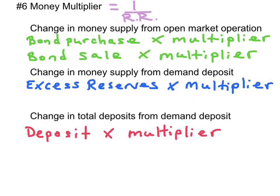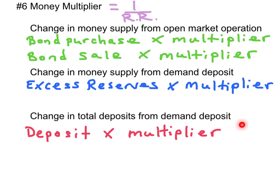The next concept is the money multiplier, which is equal to 1 divided by the reserve ratio. If the reserve requirement is 10%, the money multiplier is 1 divided by 0.1, or 10. To get the change in money supply from an open market operation — such as a bond purchase or bond sale — you multiply it by the money multiplier. To get the change in money supply from a demand deposit into a checking account, take the excess reserves from the deposit and multiply by the multiplier. To get the change in overall deposits in the banking system, take the initial deposit and multiply by the multiplier.